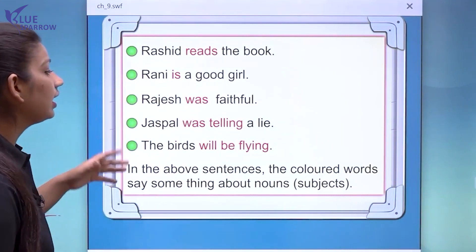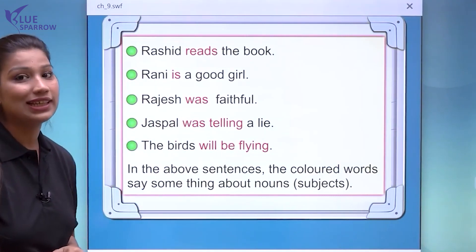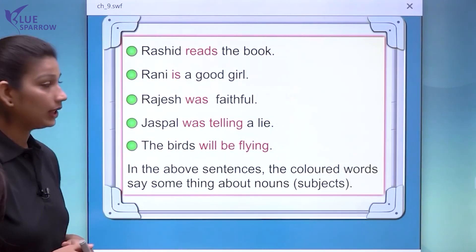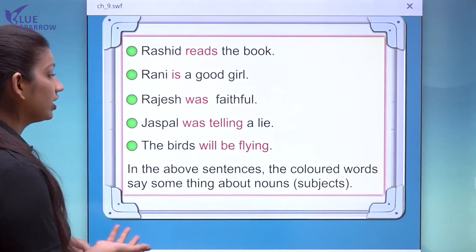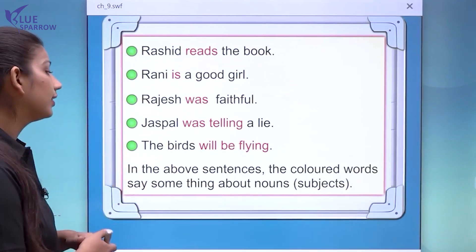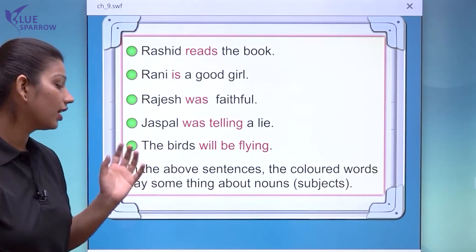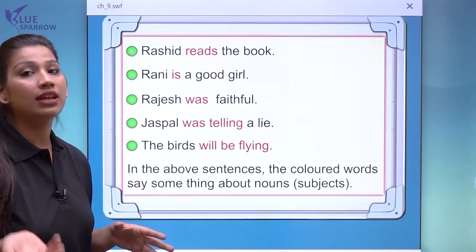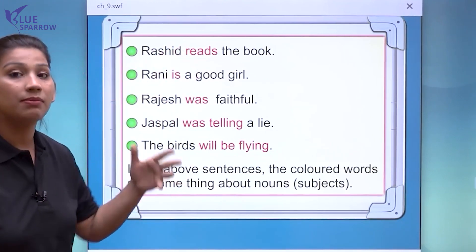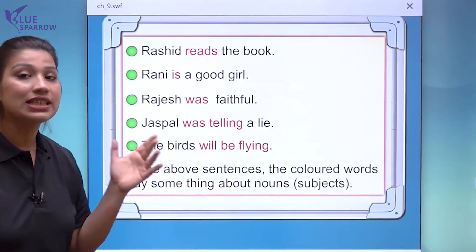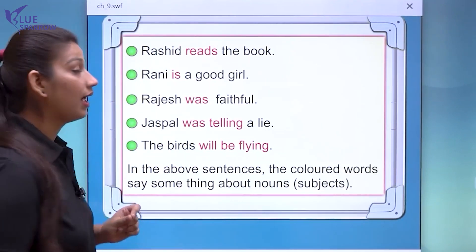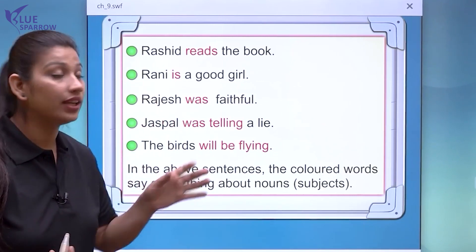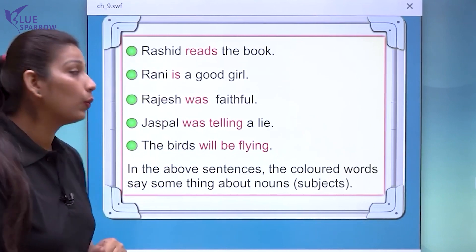Students, you can see the colored words in the sentences. In the above sentences, the colored words say something about the nouns — they are all telling something about their nouns. For example, 'reads' is telling about Rashid. Rashid is a noun here — it is the name of a person — and what the person is doing: he is reading. So 'reads' here is the verb.